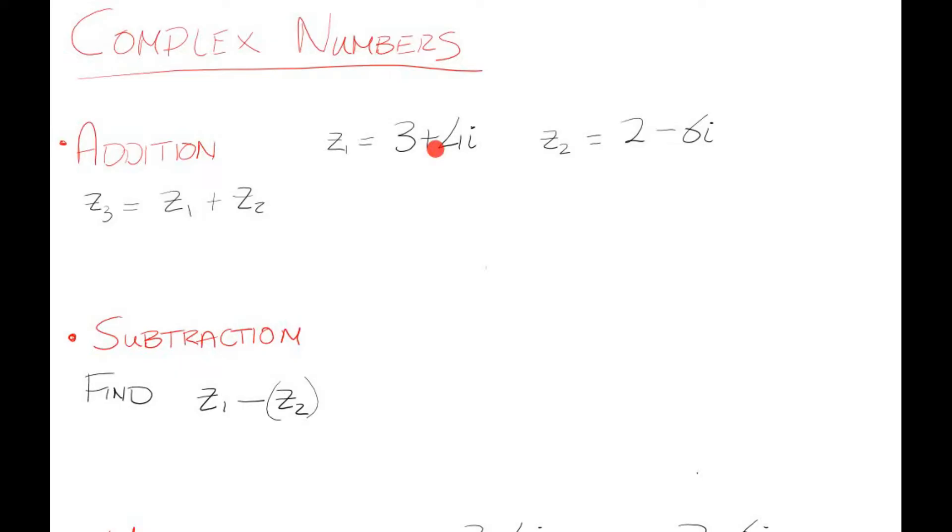Let's have a look at some basic stuff. Here's some complex numbers z1 and z2, and you can find z3 if you add the two together. So z1 is 3 + 4i and z2 is 2 - 6i. It literally is just grouping like terms together, keeping the real stuff together. That's 3 + 2 = 5, and 4i - 6i = -2i. So here's your new complex number: 5 - 2i.